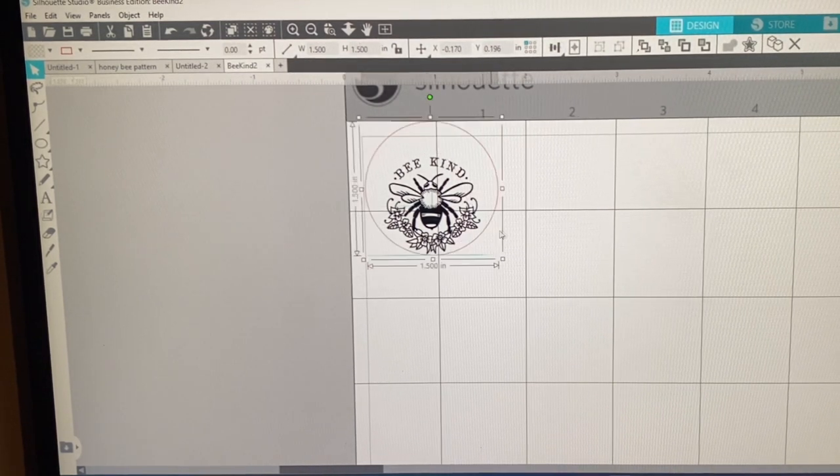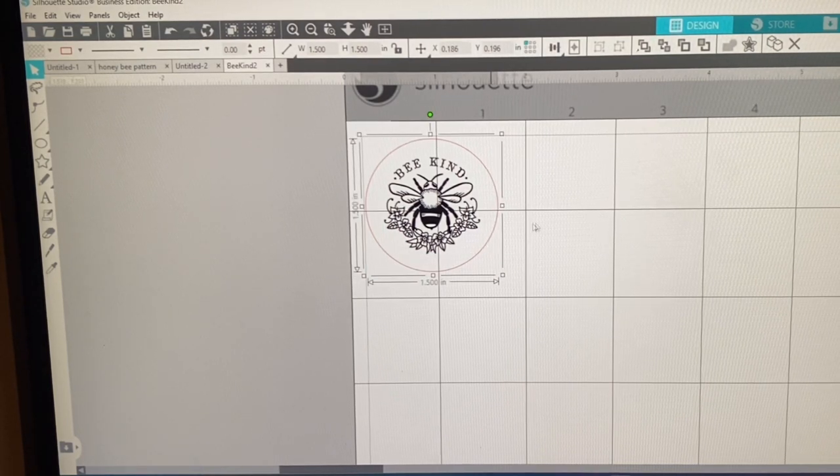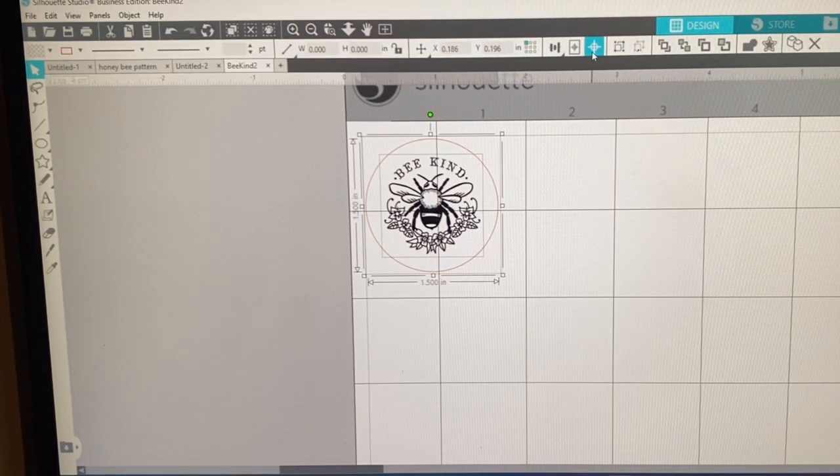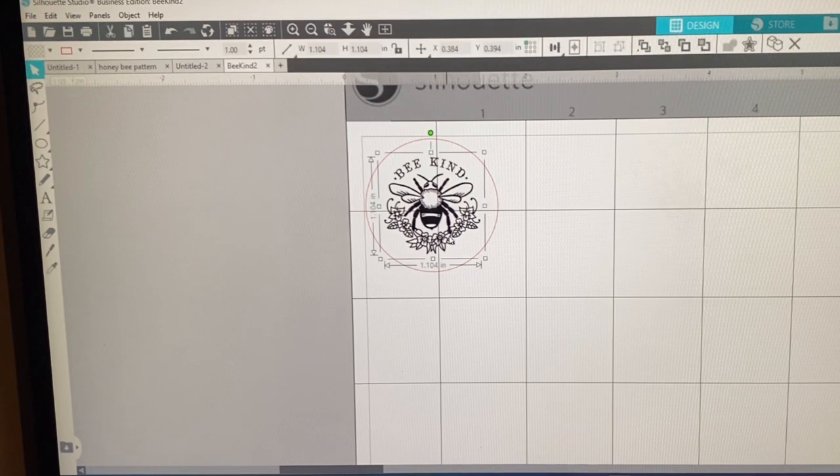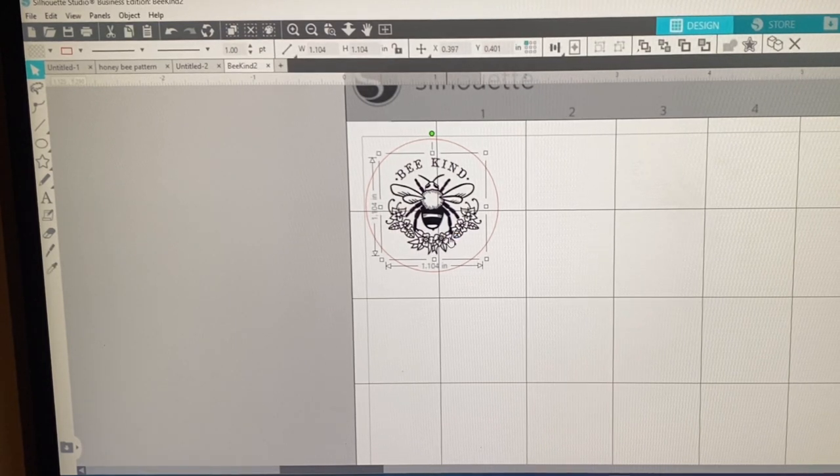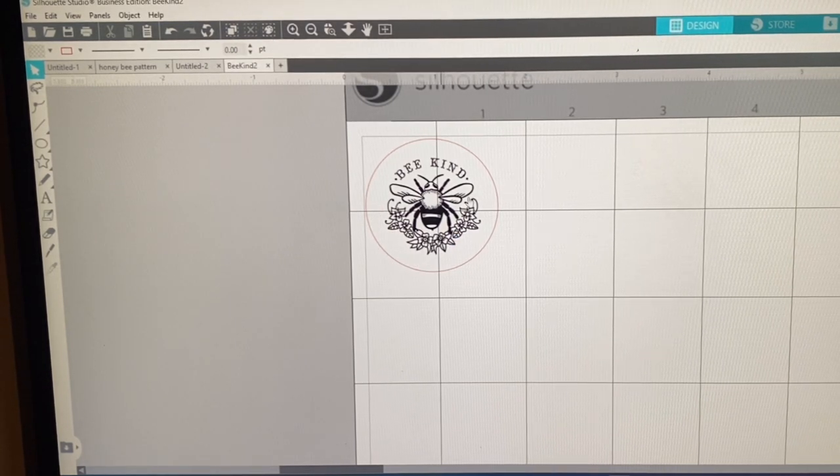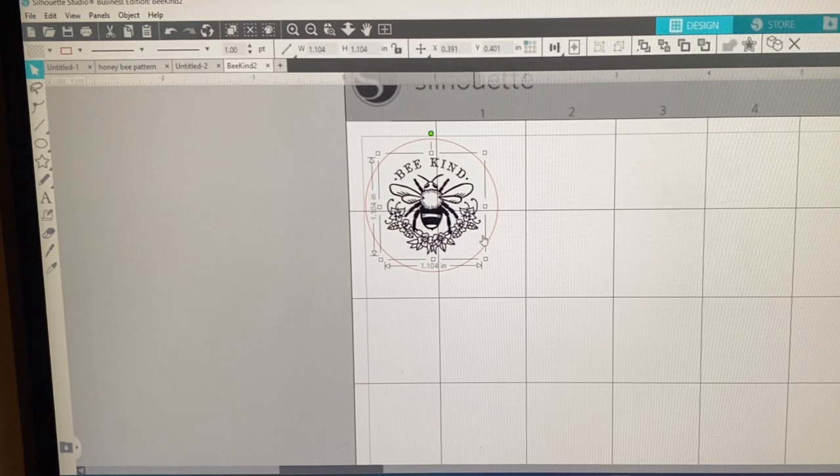Bring it over across your decal, center it. So you get an idea of what it will look like on your popsocket. I want it slightly smaller so I can have some of the honeycomb details behind the water slide.